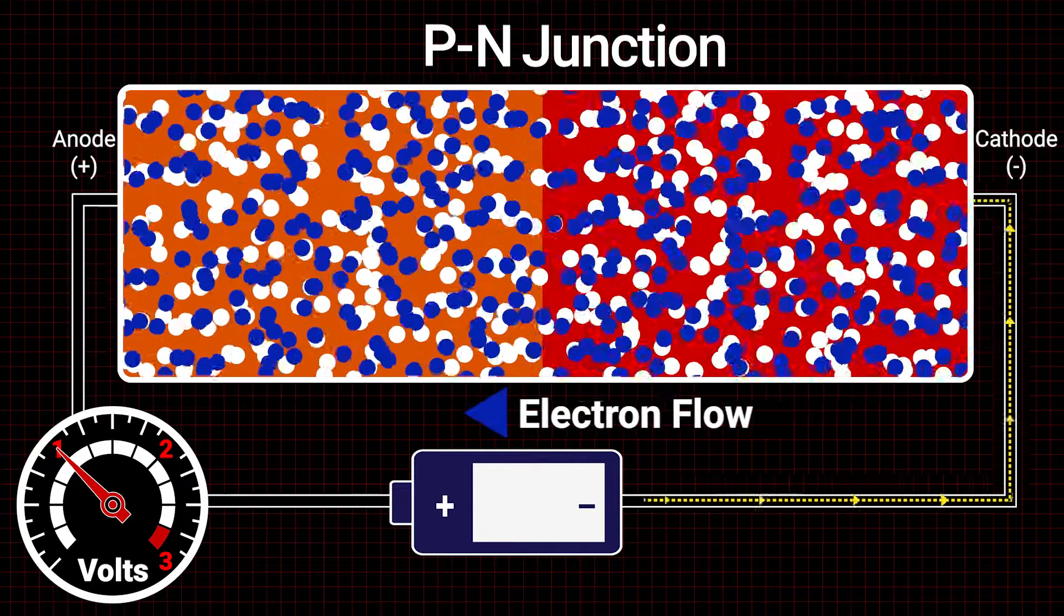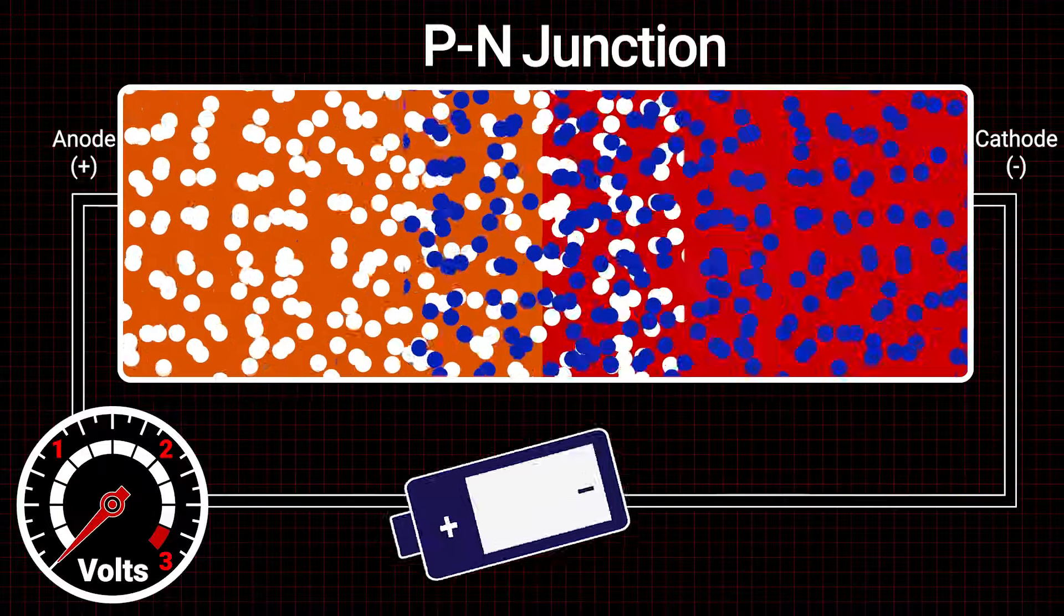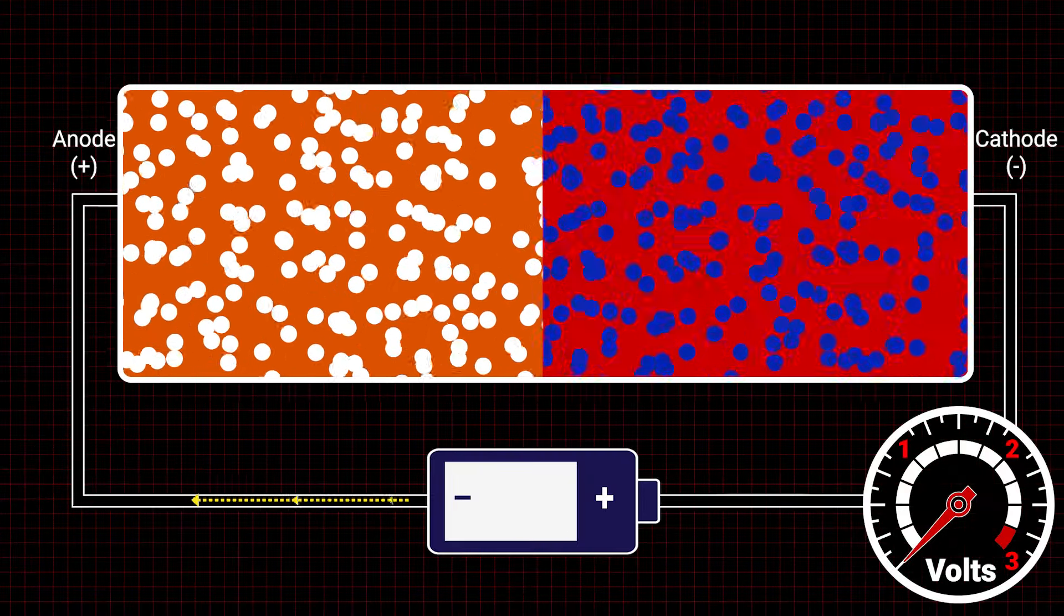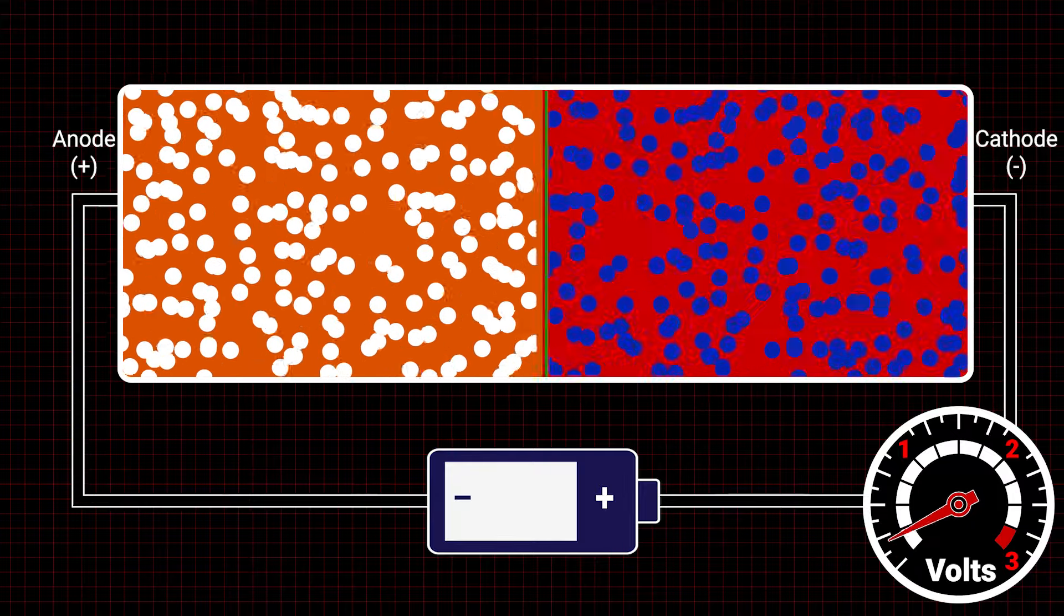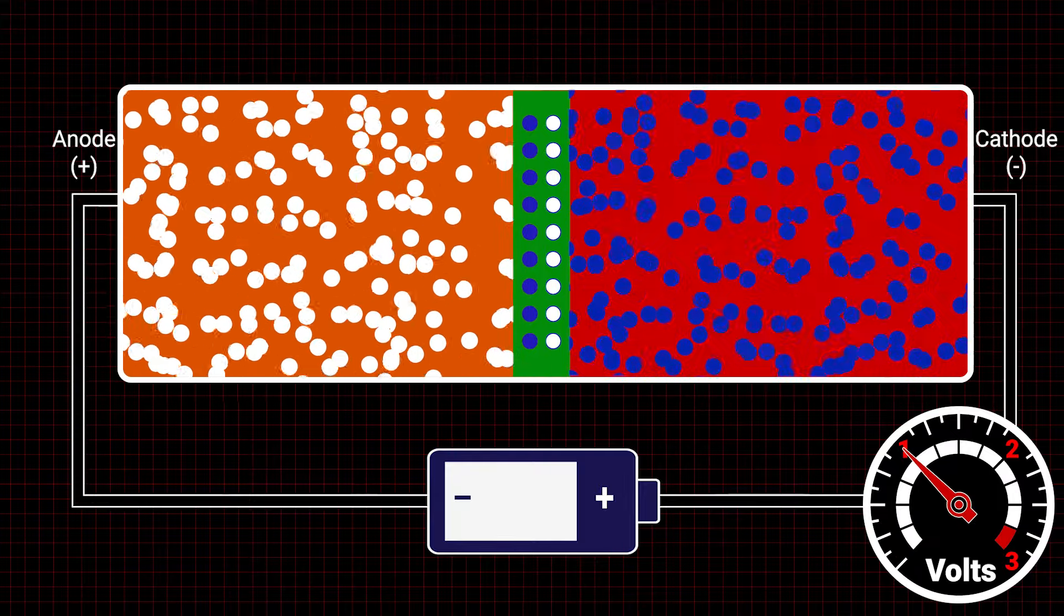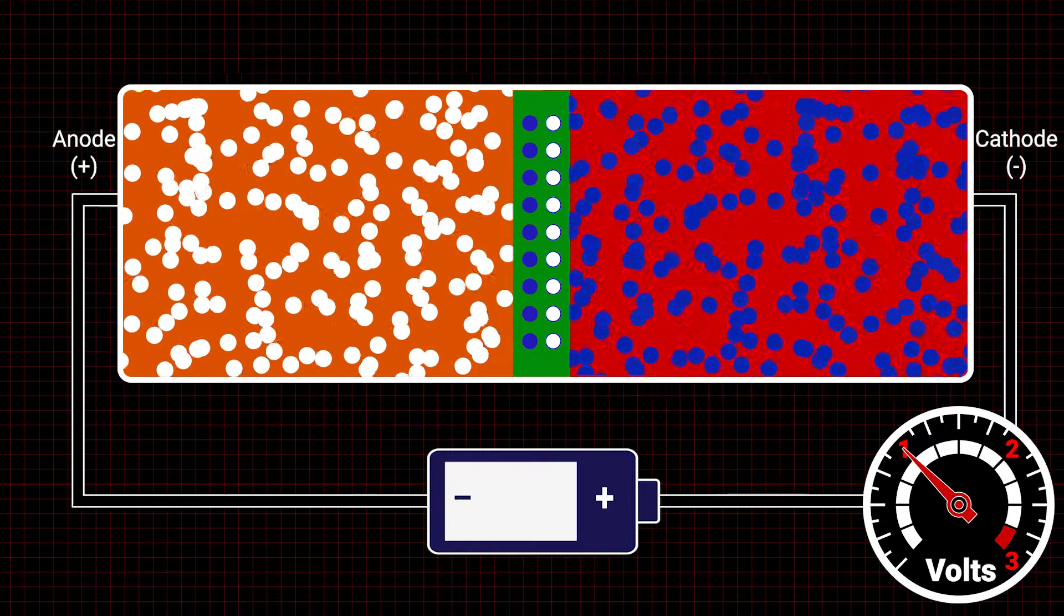If a diode is connected in reverse bias, meaning the negative lead of the power source is hooked to the anode and p-type material, while the positive is connected to the cathode and n-type material, it works as a sort of protection device, allowing only a tiny amount of current to flow.